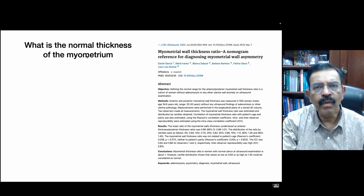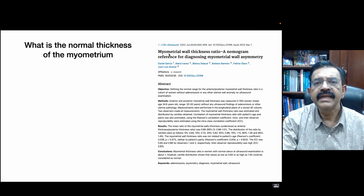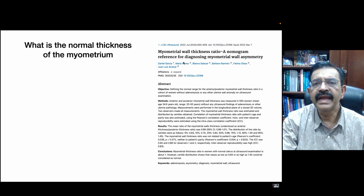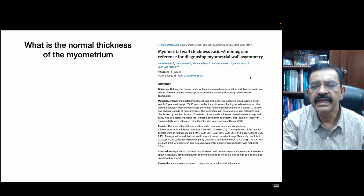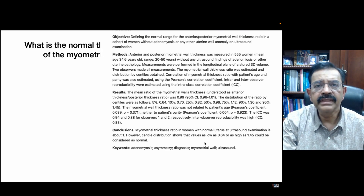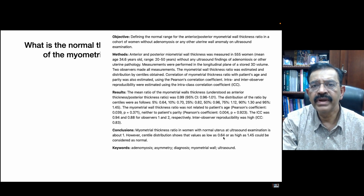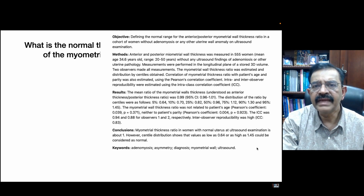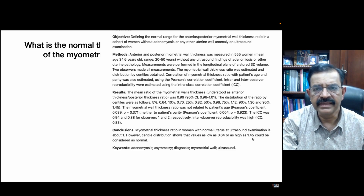What is the normal thickness of a myometrium? In a study entitled Myometrial Wall Thickness Ratio, a nomogram reference for diagnosing myometrial wall symmetry, they concluded that normal myometrial thickness can range from as low as 0.64 cm to as high as 1.45 cm. So anything more than 1.45 cm can be considered thickened.